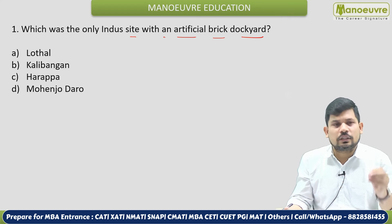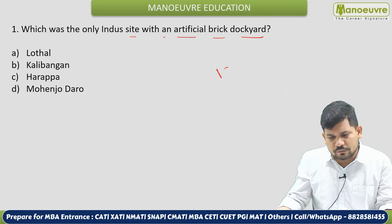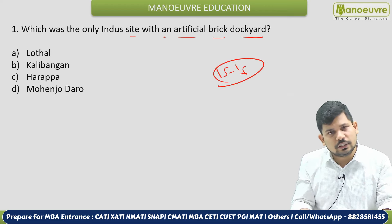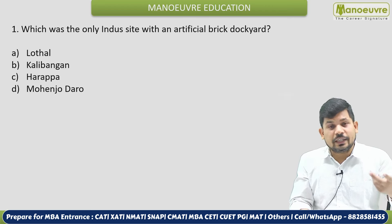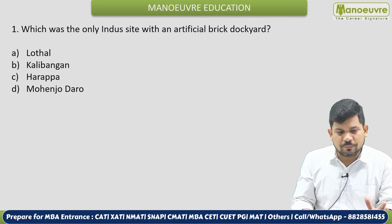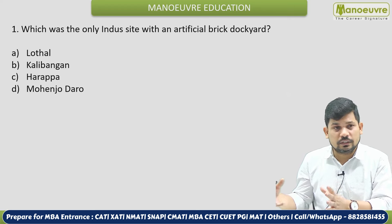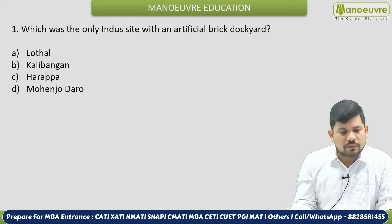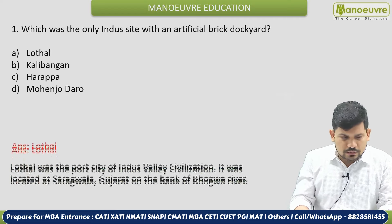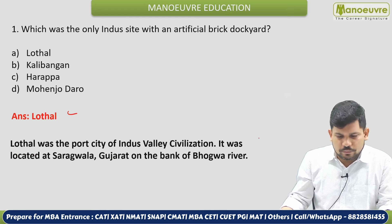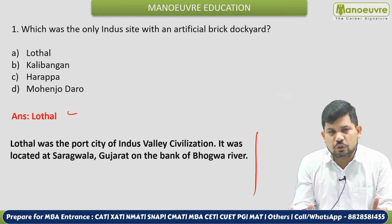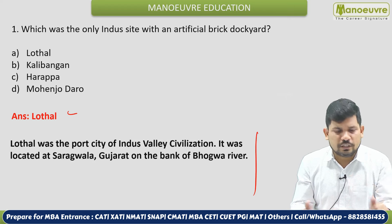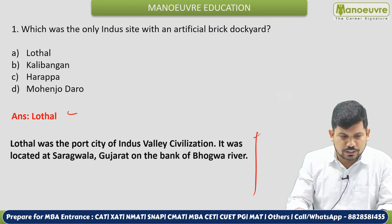If you practice well, you won't leave a single question and can easily get 15 to 16 marks, which is a very good score in this exam since CMAT has many unexpected questions. The correct answer to the dockyard question is Lothal. Complete description is provided which you can read by pausing the video, or you can join the group where I will share it.